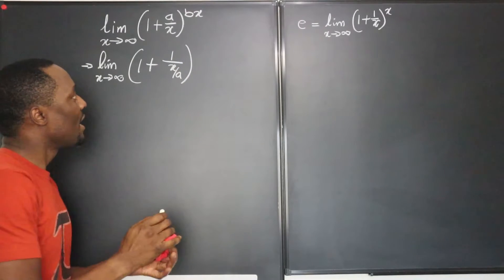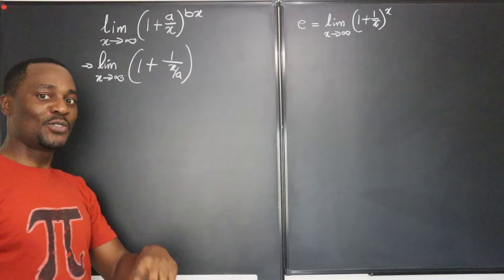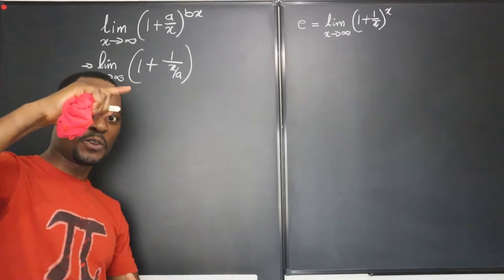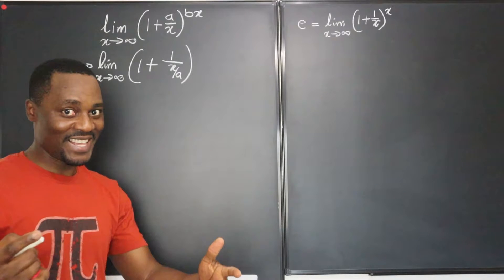Now look at this. a over x is the same thing as 1 over x over a. So the reciprocal of a reciprocal is the original.